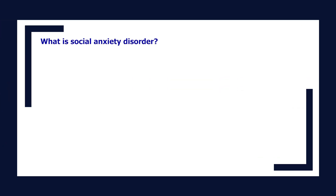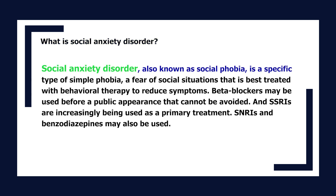What is social anxiety disorder? Social anxiety disorder, also known as social phobia, is a specific type of phobia — a fear of social situations — that is best treated with behavioral therapy to reduce symptoms. Beta-blockers may be used before a public appearance that cannot be avoided. SSRIs are increasingly being used as primary treatment. SNRIs and benzodiazepines may also be used.